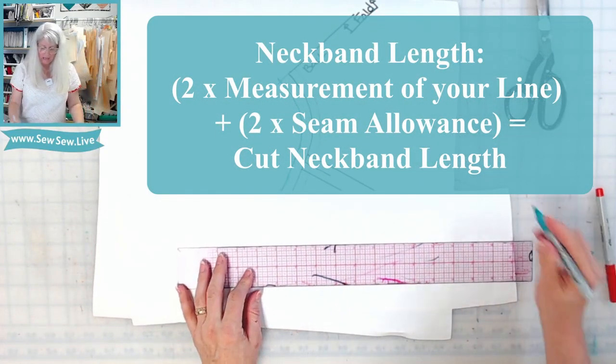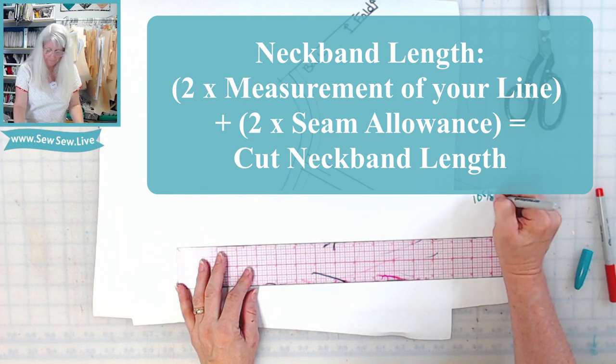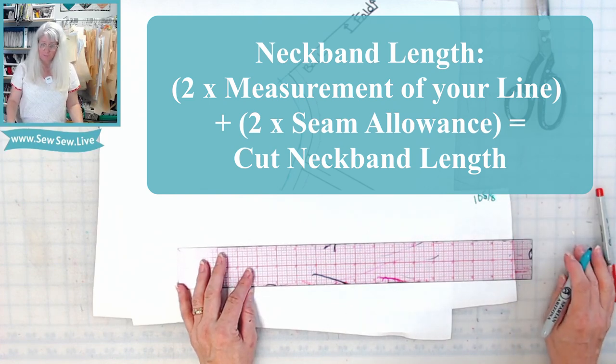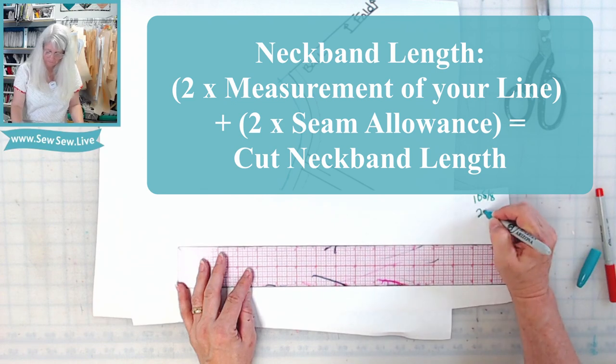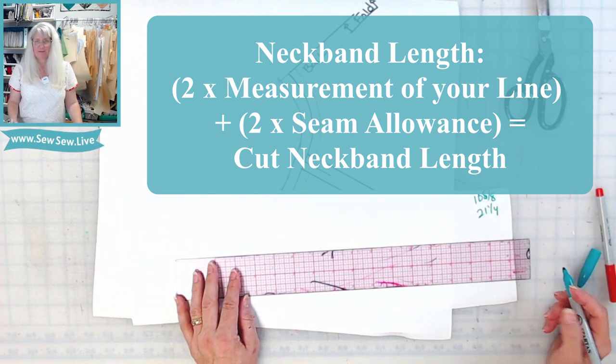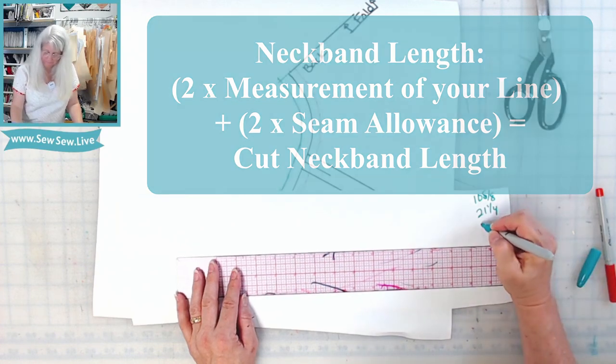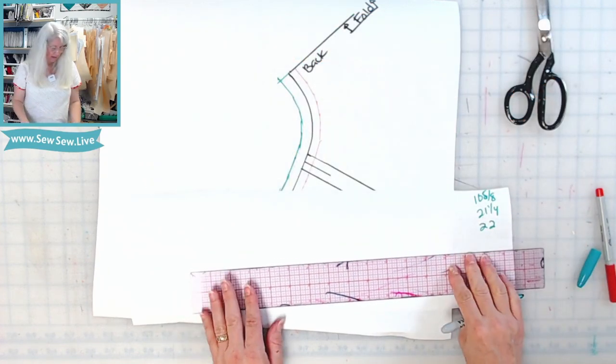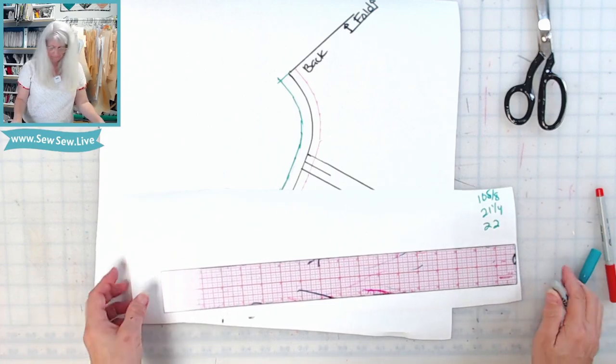Alright, and so now you need a piece of paper. Now you're going to take that measurement and you're going to multiply it by two. Now you're going to add seam allowance twice. Alright, and so let's see what that looks like here.